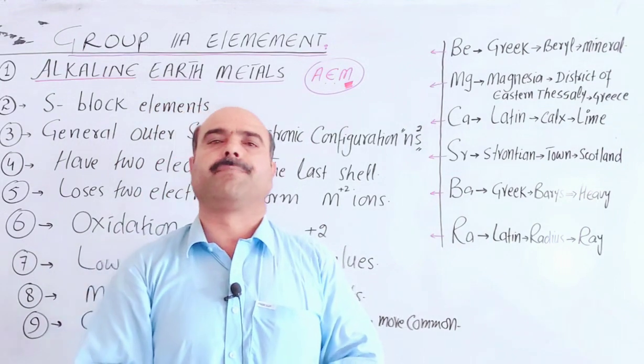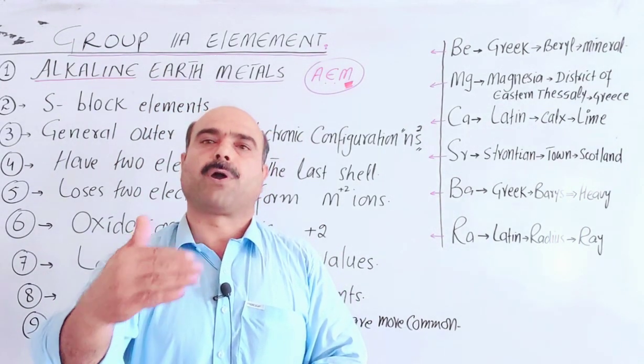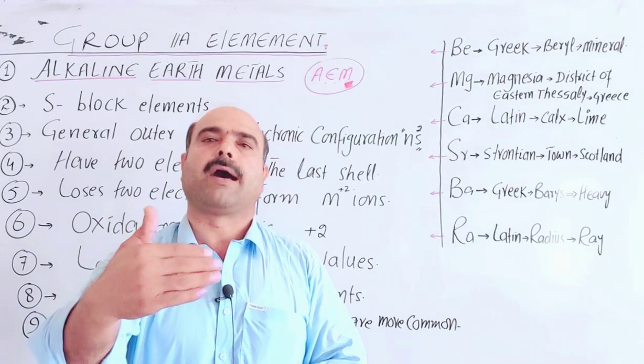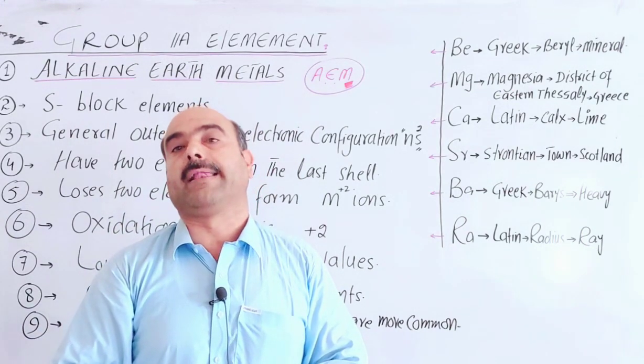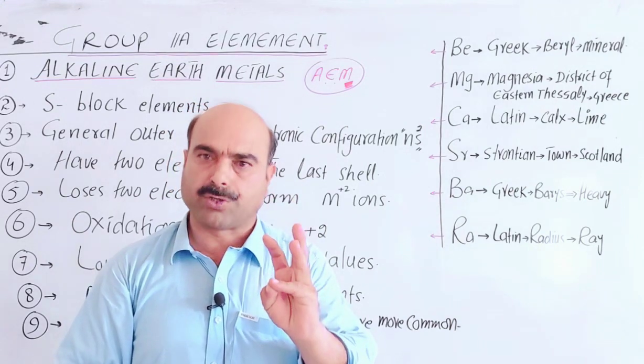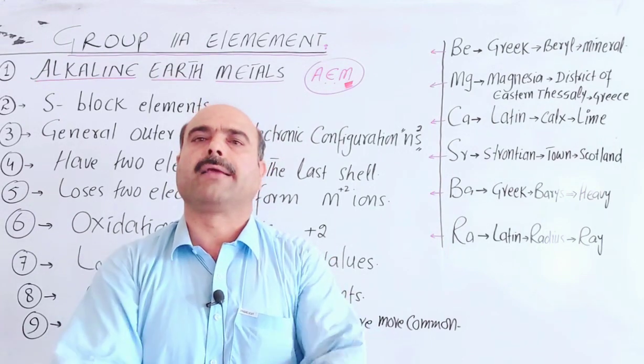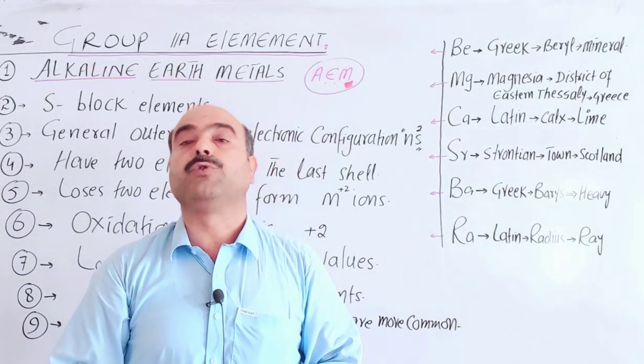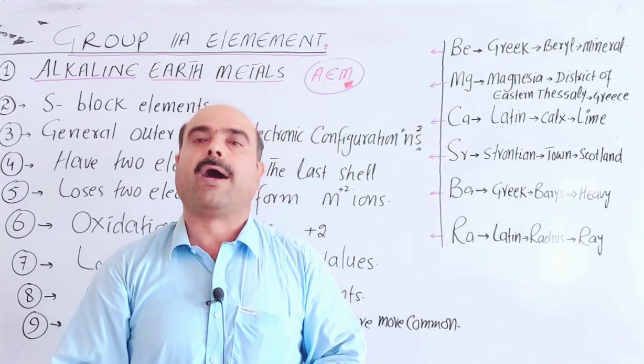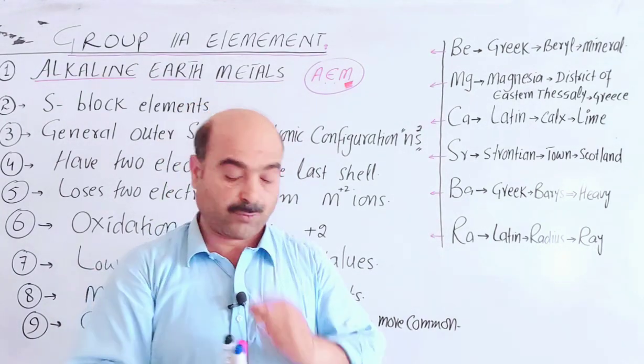Alkaline - these elements react with water and the products formed are hydroxides or oxides. When these react with water, they produce alkali, which is alkaline or basic in nature. Alkali means water-soluble bases are called alkali. That is the origin of the word alkaline.